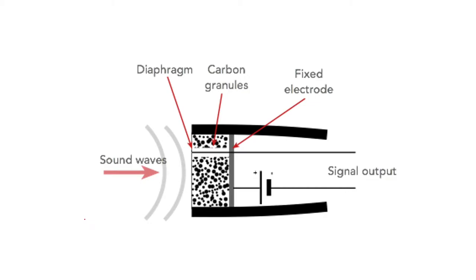In this carbon microphone, we are going to use the basic resistance of carbon granules. In this figure, we have shown that the sound waves are incident here, and here you are having a diaphragm, and here you are having a fixed electrode, and in between you are having all these carbon granules.